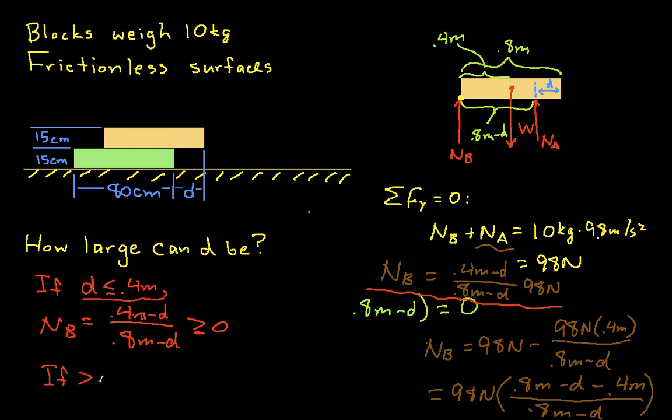If D is greater than 0.4 meters, then you can see that NB is less than 0. So, for NB to be less than 0, that means that the arrow that we have here would actually be in the wrong direction, which would mean somehow that the bottom block is pulling on this corner. The bottom block is somehow pulling on this corner to keep it down. And there's just no way it can do that. This block can't pull the top block. It can push it away, but it can't pull it towards itself. So, what this basically tells us then is that D can be anything between 0 and 0.4 meters before the top block will start to tip. If D is larger than 0.4 meters, then the top block will start to tip and things come apart.